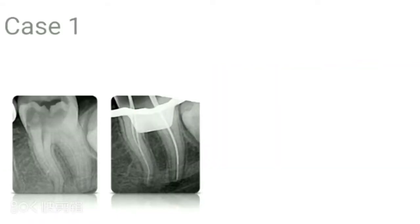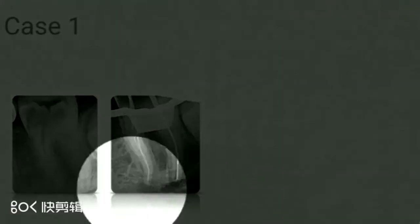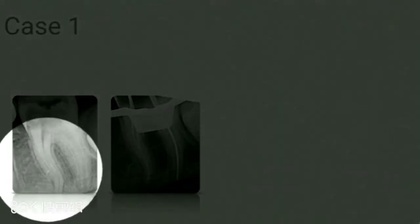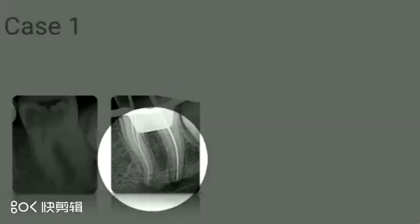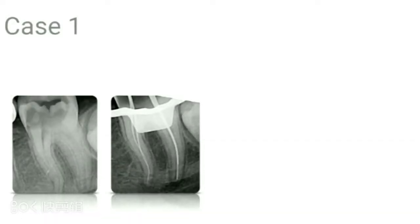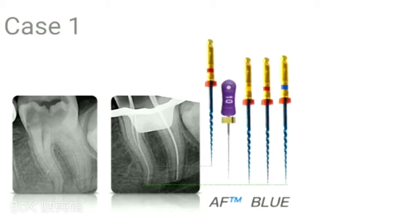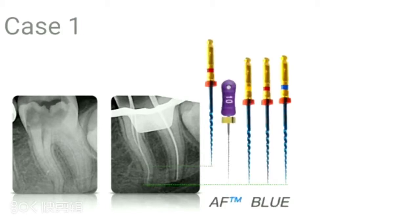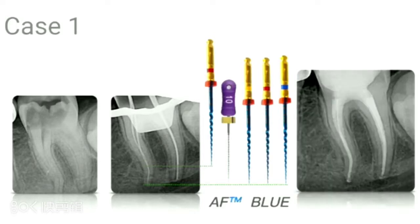Let's see this series of cases. From the pre-operative radiograph, we can clearly see an S-shaped curvature. This is the working length radiograph — it was easy for planning. In this case I used the AF Blue from Fanta, a martensitic file. I used the 25 taper 4 for shorter working length, then the number 10 K-file for patency, followed by 20, 25, and 30. This was the final radiograph.